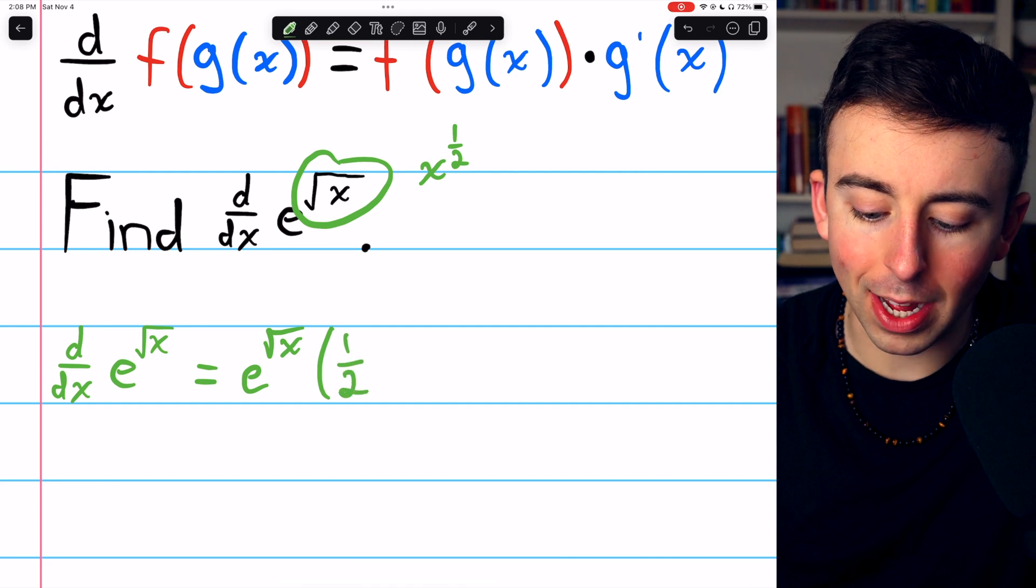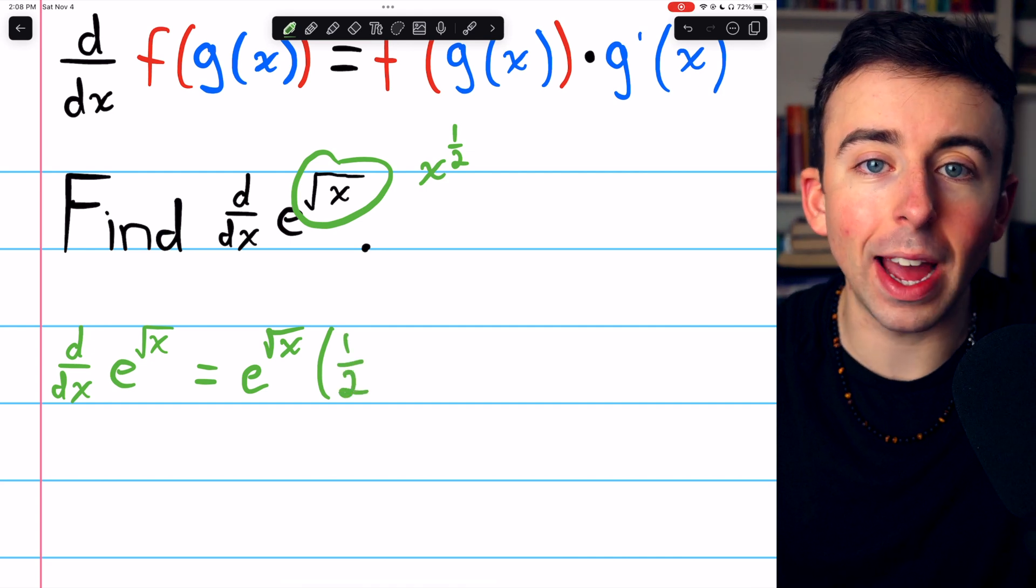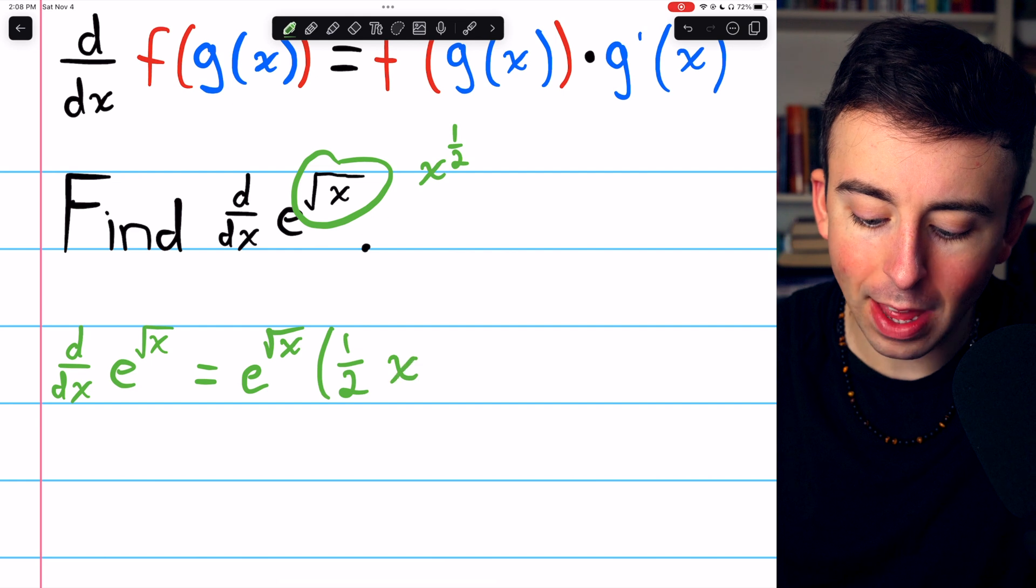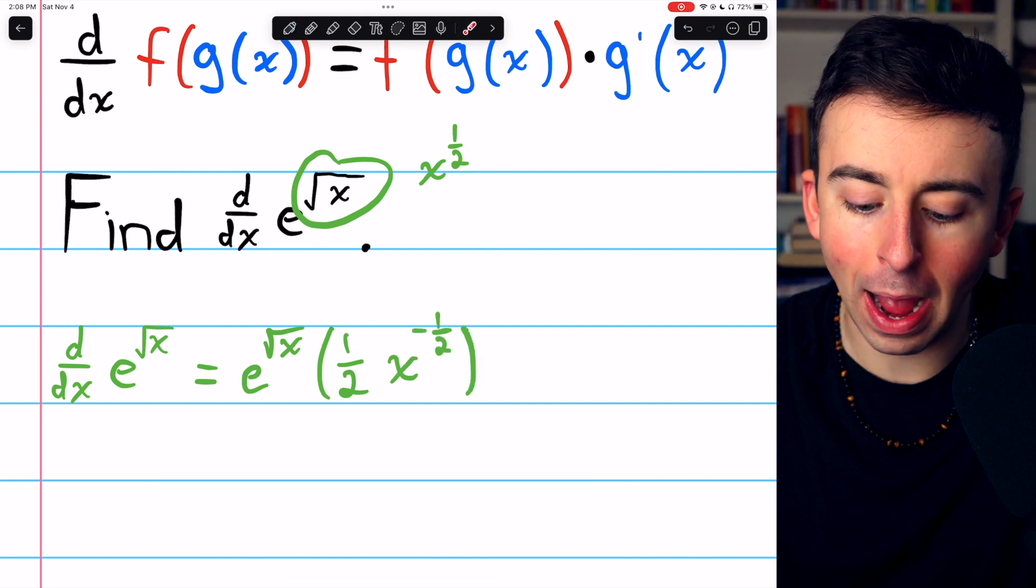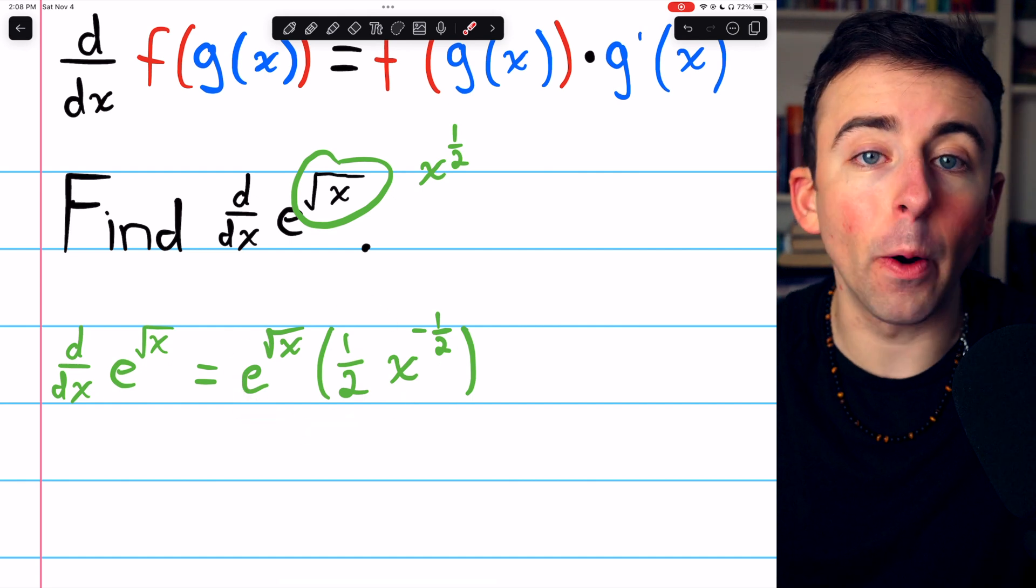So we'll multiply by the derivative of the square root of x, which is one-half x to the minus-half. Again, that's just using the power rule, and that is our derivative.